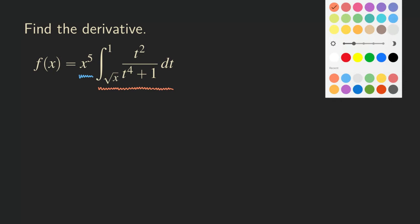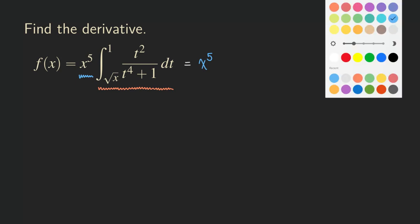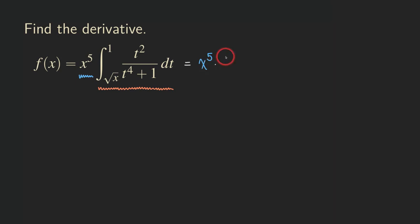So how do we do that? We are going to rewrite the function — we are not taking the derivative, we're just changing the look of the function. We are going to copy x to the fifth, and then it's a product times this integral. According to the FTC, we need to make sure that this integrand is continuous. Looking at this rational function, there is nothing we plug into t that will cause problems, so it's continuous everywhere.